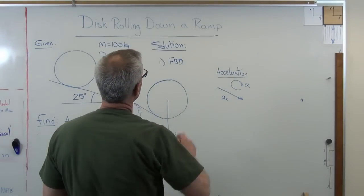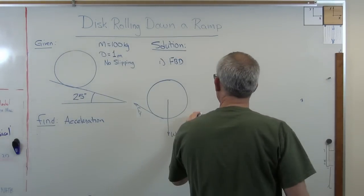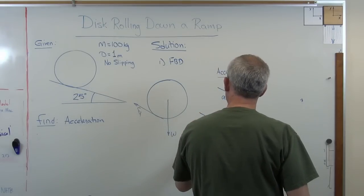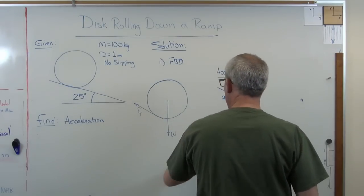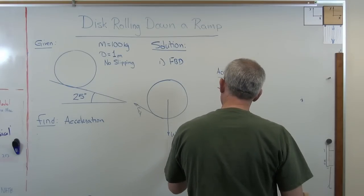Now I kind of hinted at it here. We have A sub X. We need a coordinate system. Typically, unless you have a pretty good reason, you're going to want the coordinate system to match the ramp.